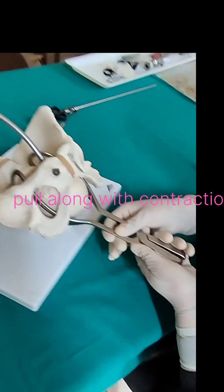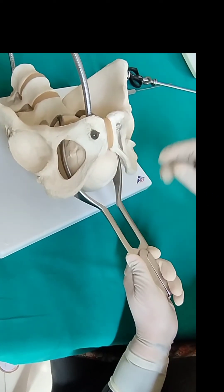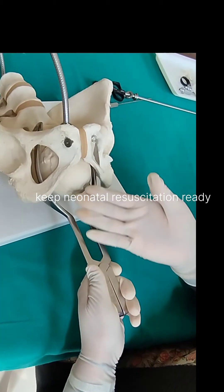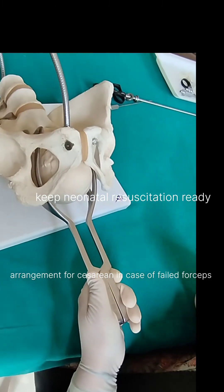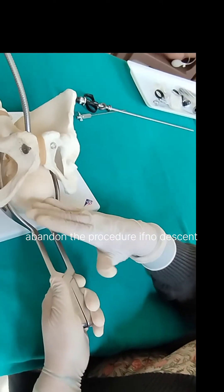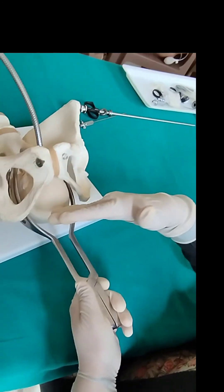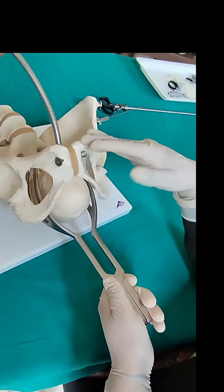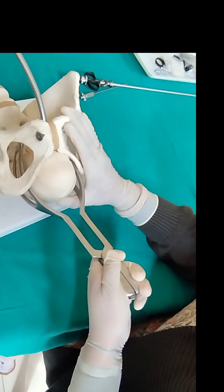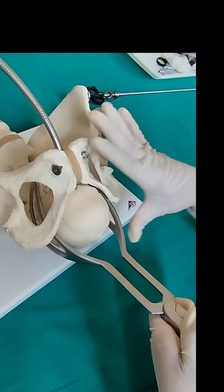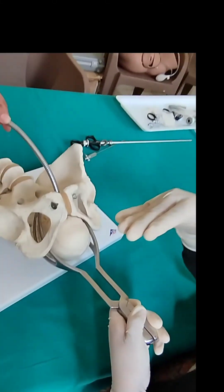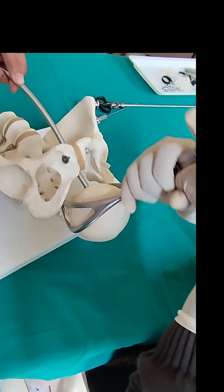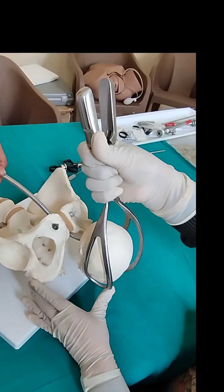Now we have to provide steady traction along with uterine contractions to deliver the baby. The direction of the traction, when it is straight towards yourselves, is downwards. And when it is straight along with outwards, straight towards yourselves and in an upward direction, it is downwards and forwards. So in an outlet forceps, the direction remains first downwards, and then downwards and forwards. So along with the uterine contractions, we will deliver the baby in a movement of extension.